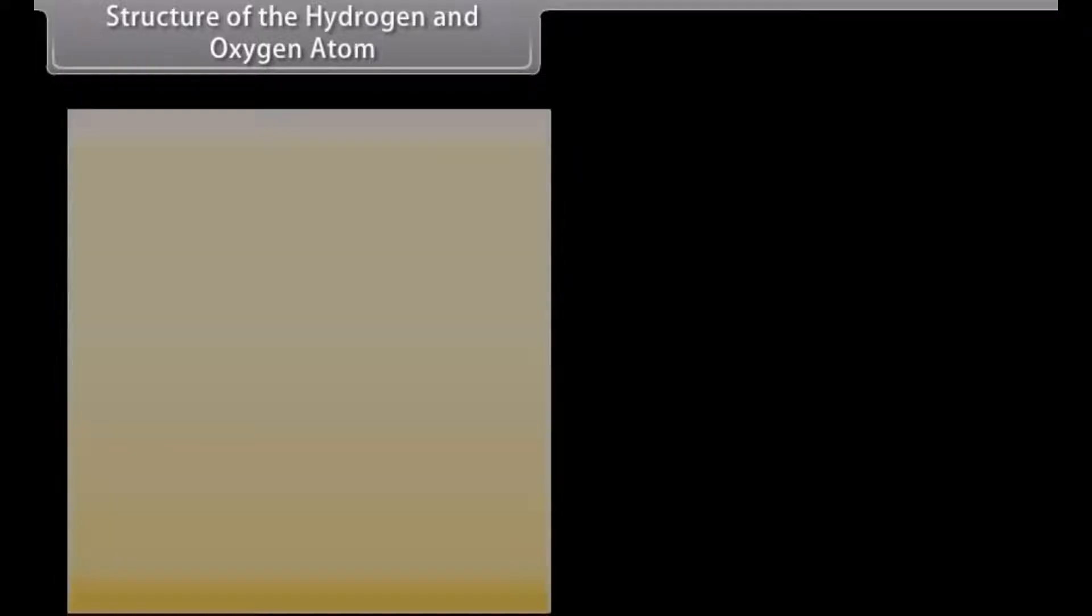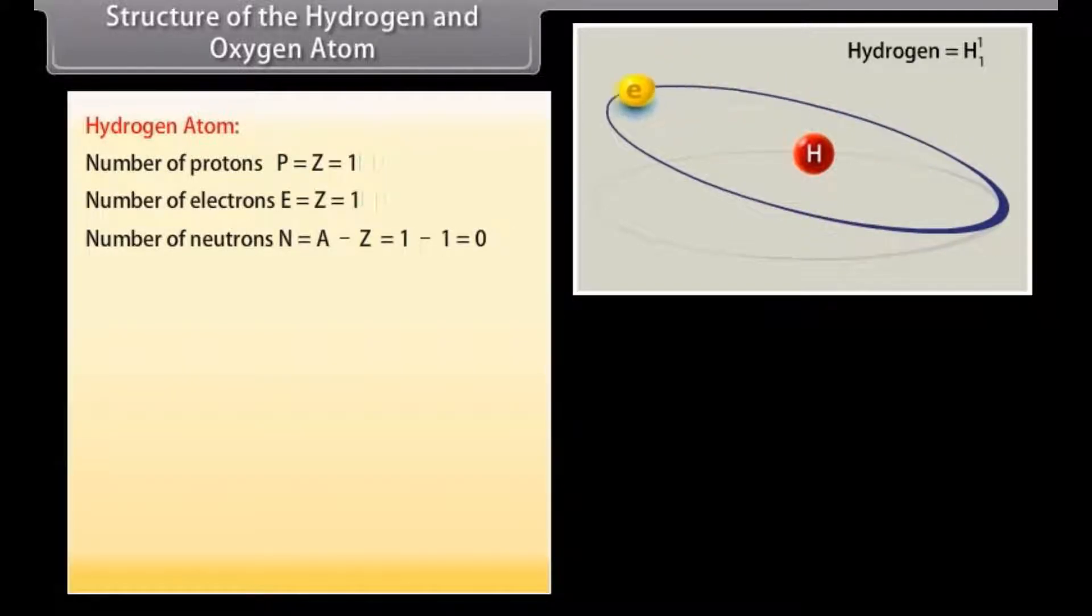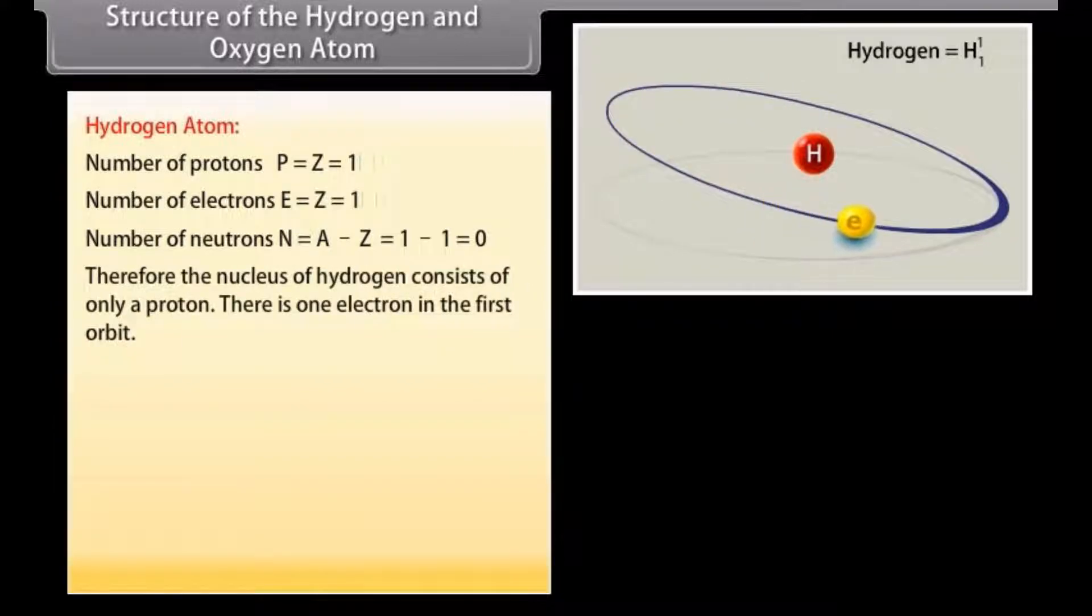Structure of the hydrogen and oxygen atom. Hydrogen atom: Number of protons, P is equal to Z is equal to 1. Number of electrons, E is equal to Z is equal to 1. Number of neutrons, N is equal to A minus Z which is equal to 1 minus 1 which equals 0. Therefore, the nucleus of hydrogen consists of only a proton. There is one electron in the first orbit.